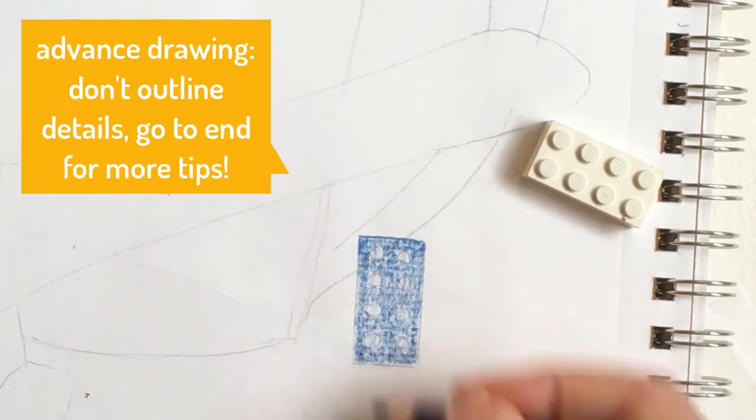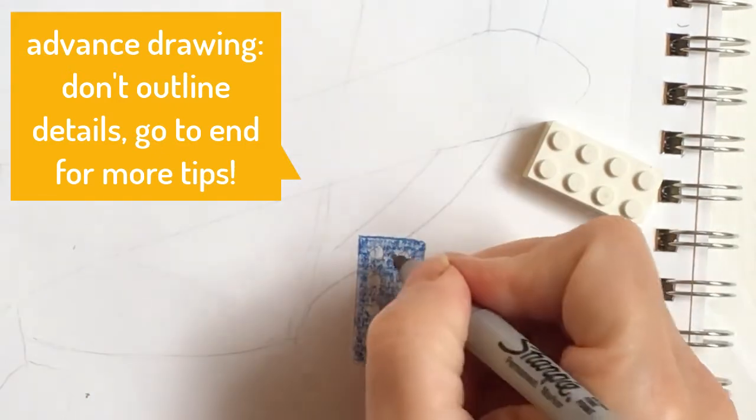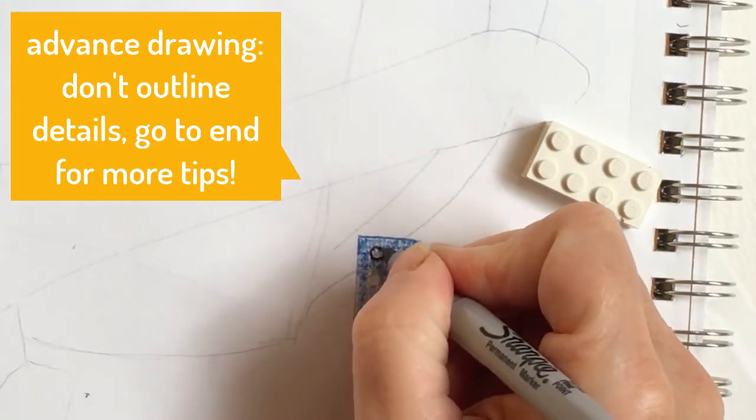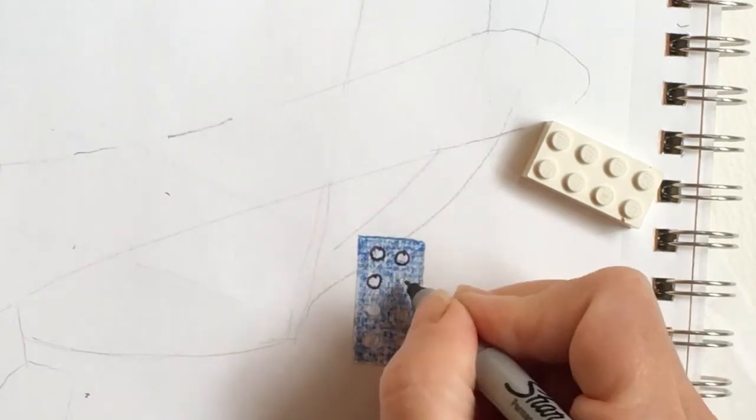Later once you color it all in then you get to outline it with a black marker. For students who want more advanced drawing tips, do not outline and watch the video titled extra tips. Have fun coloring and can't wait to see your finished projects.